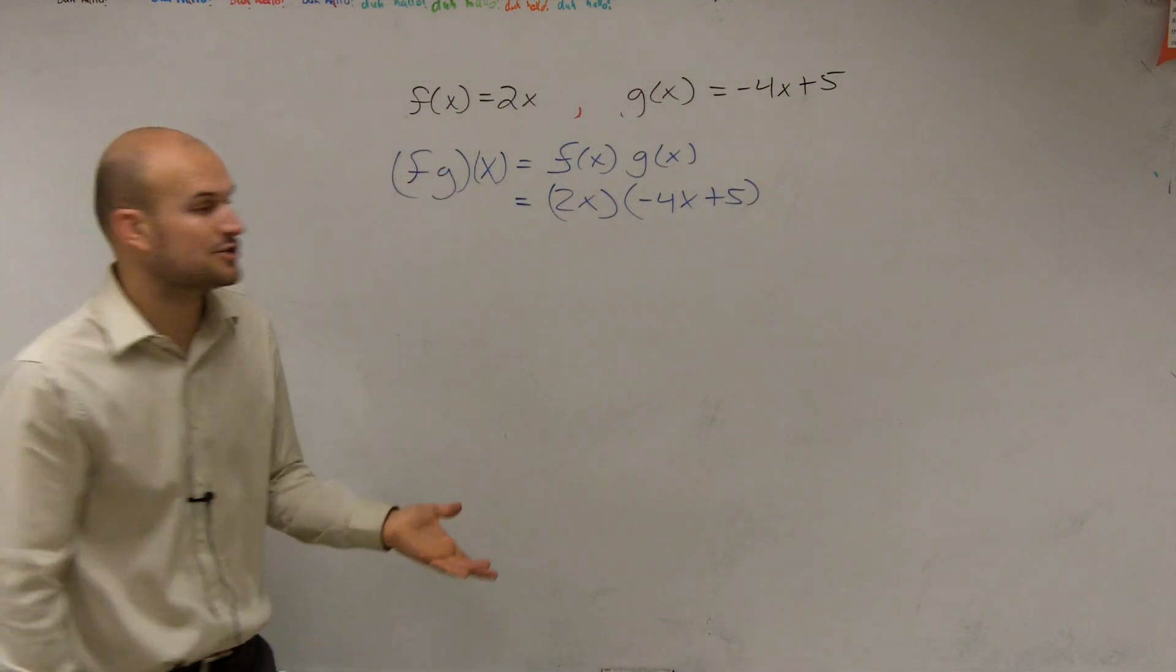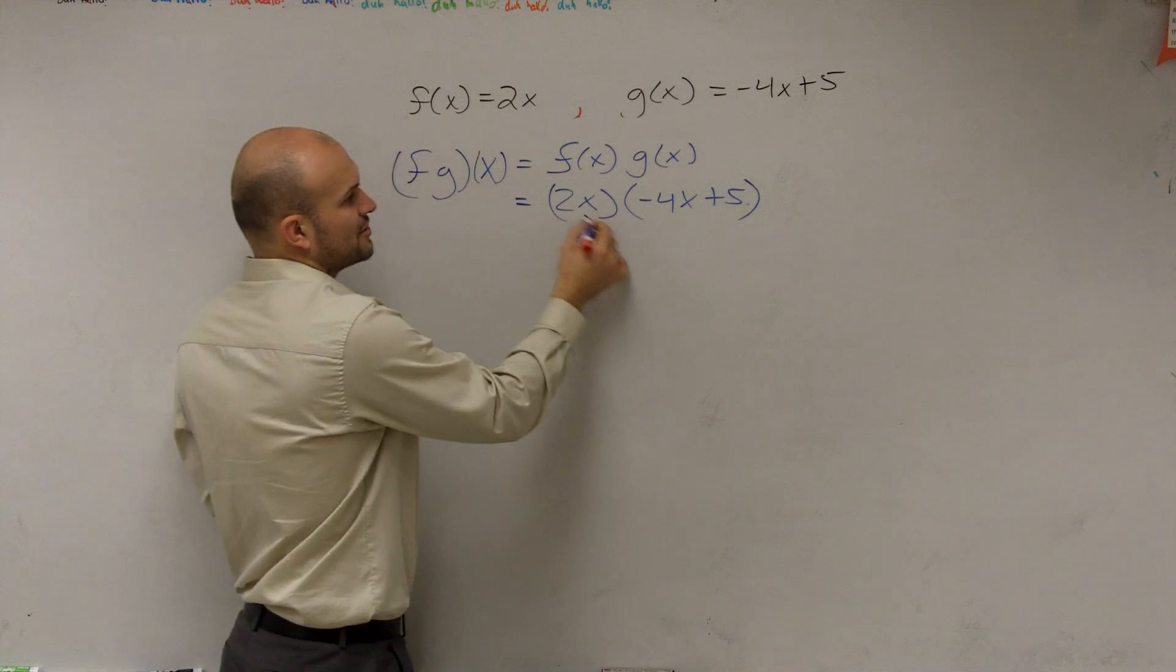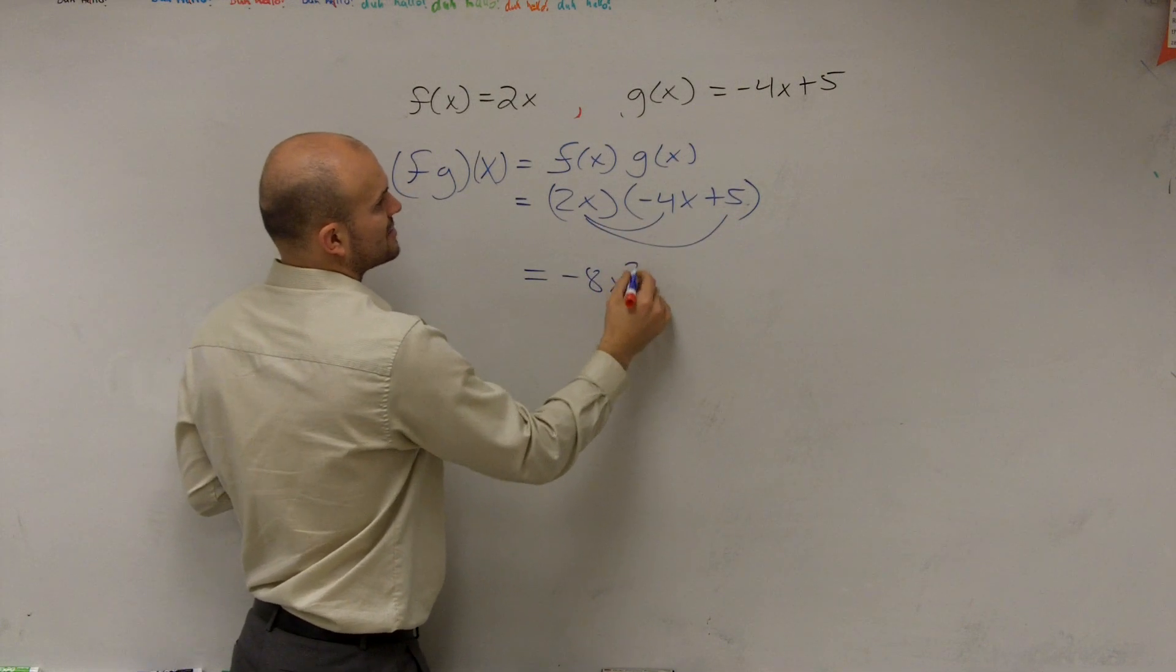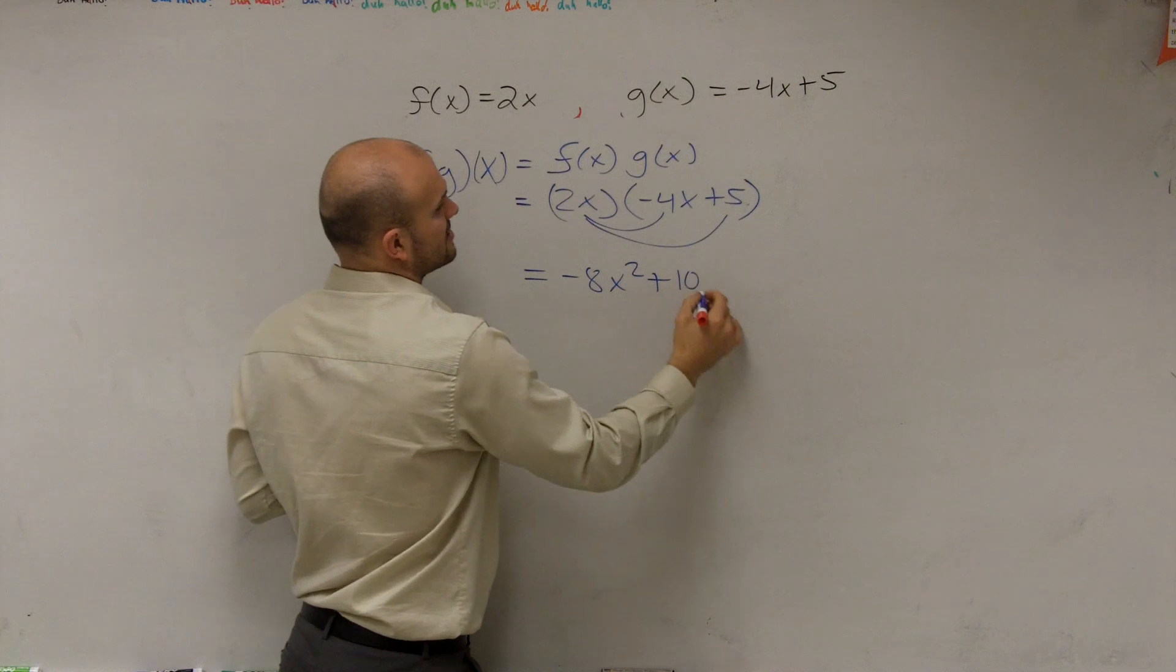Make sure you put the parentheses in there so you can follow the distributive property. So this becomes negative 8x squared plus 10x.